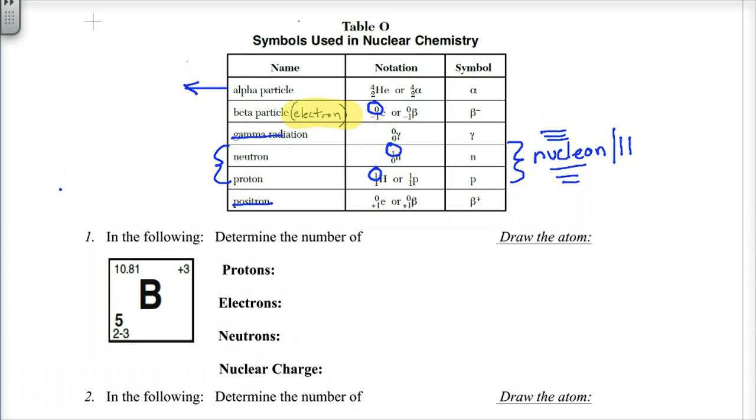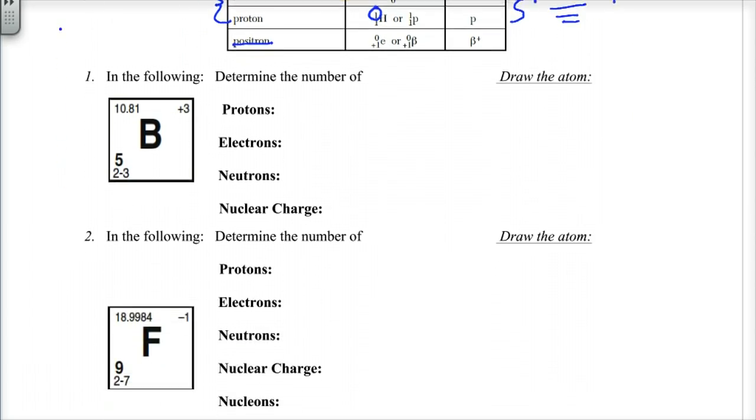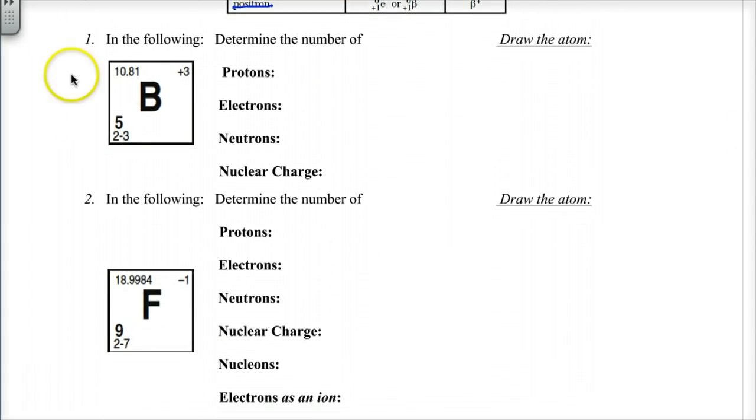So real quickly, let's go through these. Okay. Determine the number of protons for boron. Hey, don't be a boron. Get this right. That, of course, is going to be five. Because I didn't say the word ion, so we have to assume atom, atomos. Atoms are neutrals, so it has to be five electrons. Neutrons. I'm going to round this number to 11. 11 minus 5. We get 6. Okay.